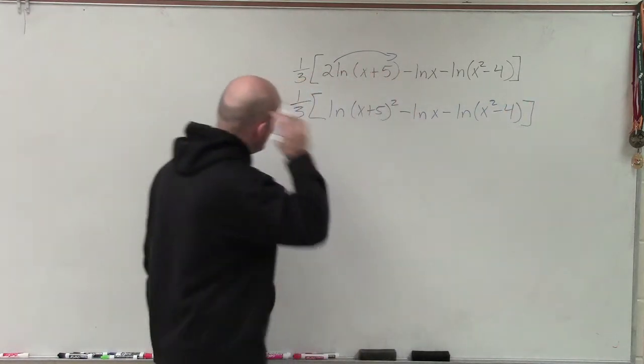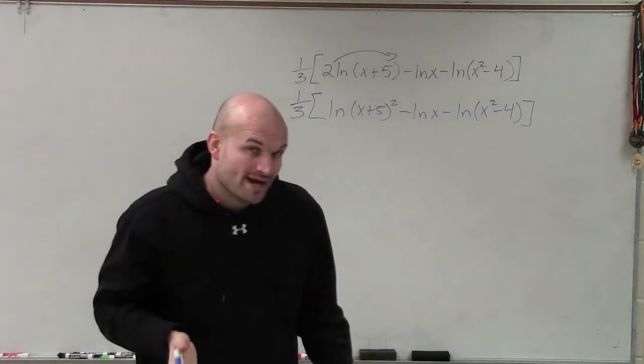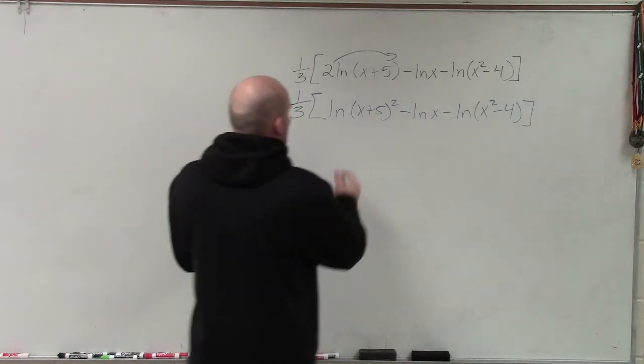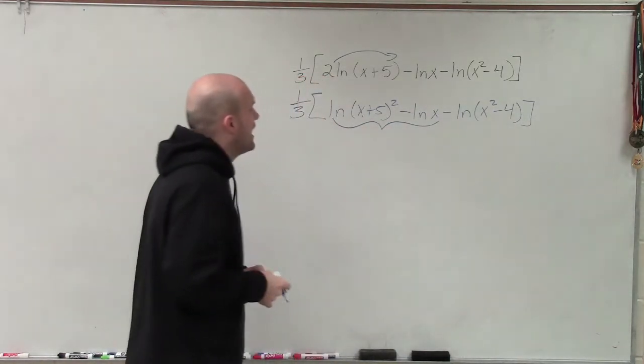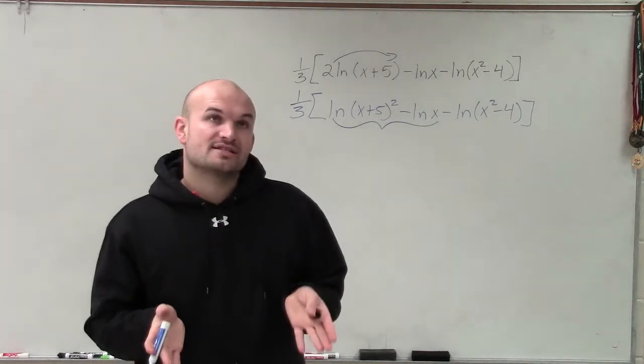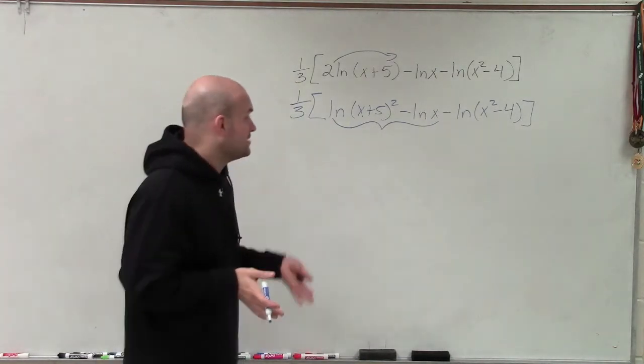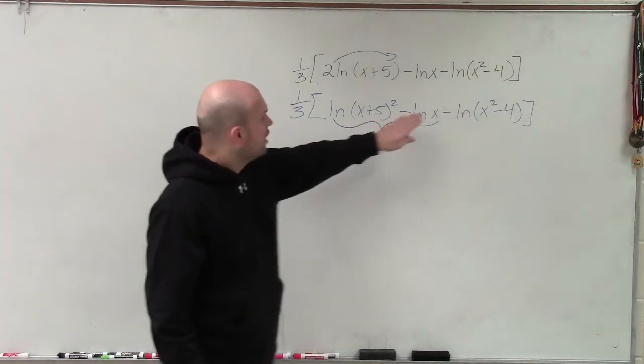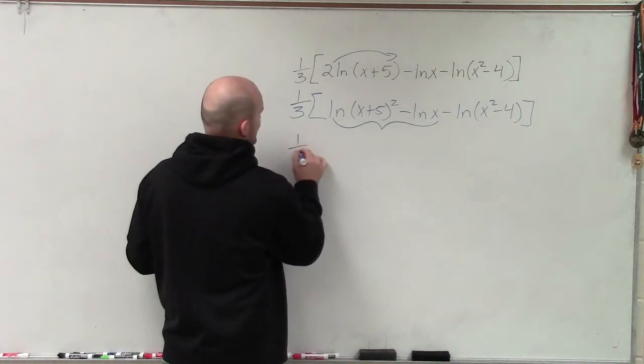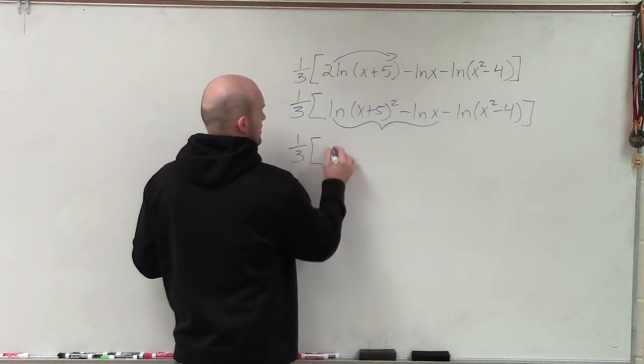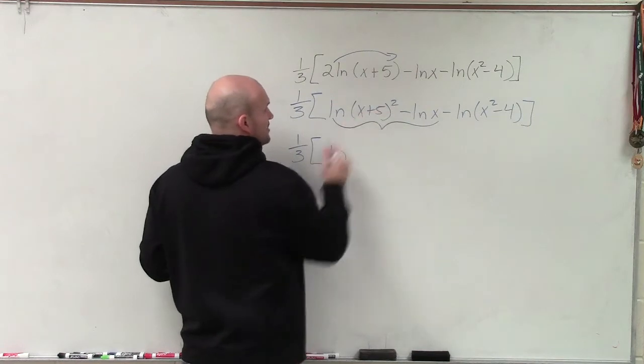The next thing I'm going to do is working from left to right inside my parentheses, I am going to use my quotient property of logarithms. Notice that when I have the difference of two logarithms, I can rewrite that as the quotient of what I'm evaluating for. So therefore I can rewrite this as 1 third ln of x plus 5 squared.